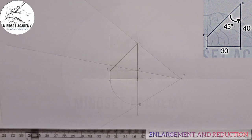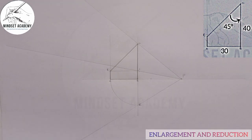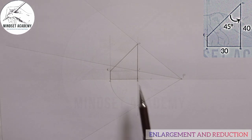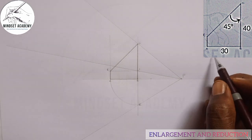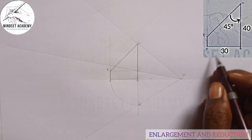Now we want to enlarge this figure. When you talk about enlargement, you are doubling the size — you are increasing the size. So we want to take it to a ratio of 2 is to 1.